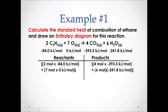For the reactants, we take the molar heat of formation of ethane (negative 84.0 kJ/mol) times its coefficient of 2, plus zero times 7 for oxygen. For the products, CO₂ gives negative 393.5 kJ/mol times 4, and H₂O gas gives negative 241.8 kJ/mol times 6. This gives us the sums of the heats of formation for both reactants and products.